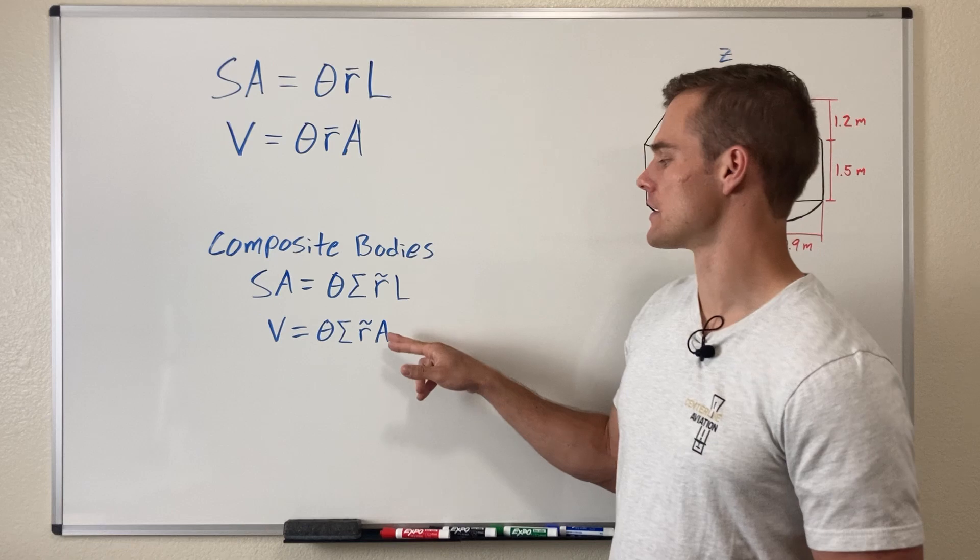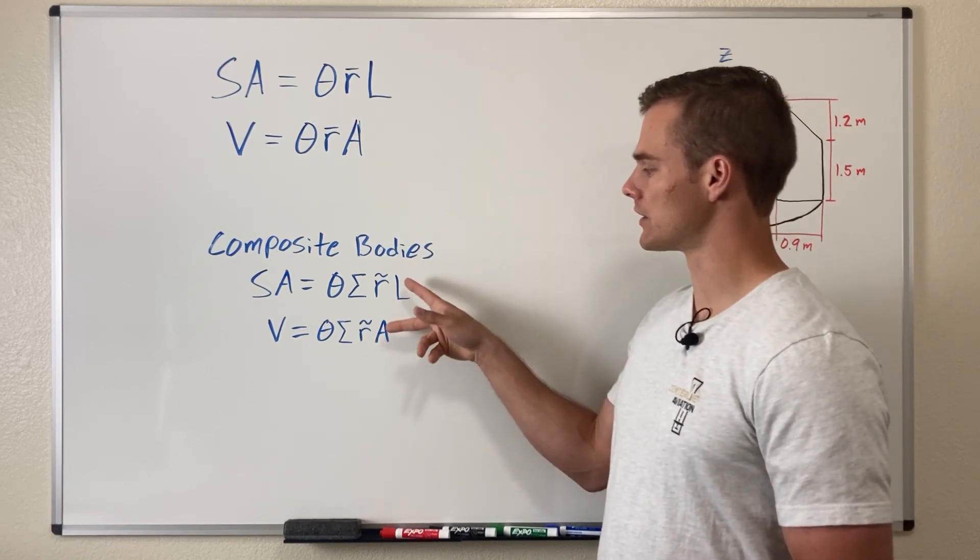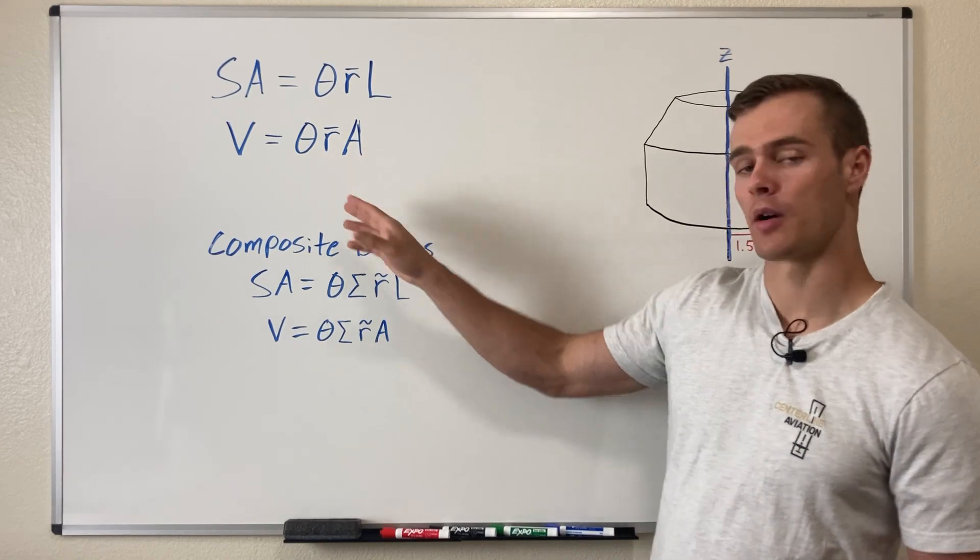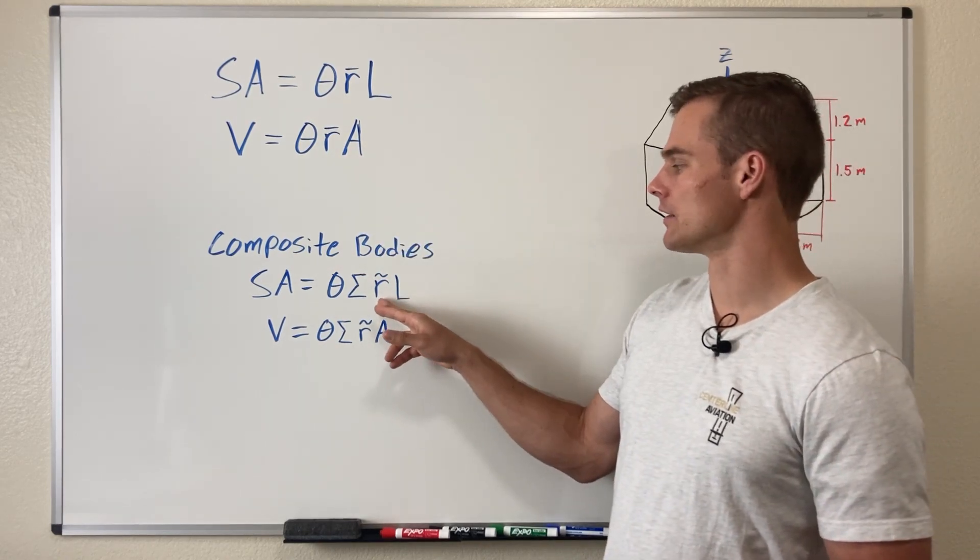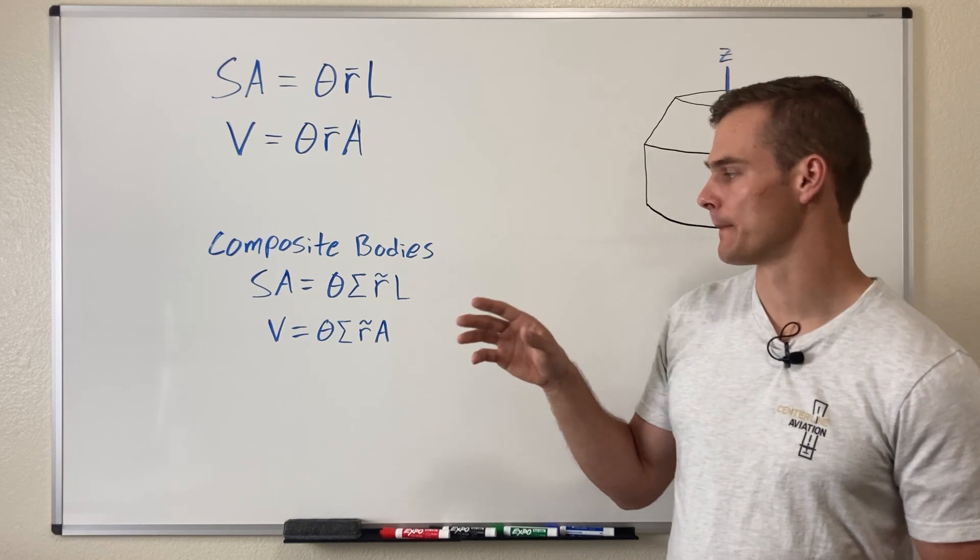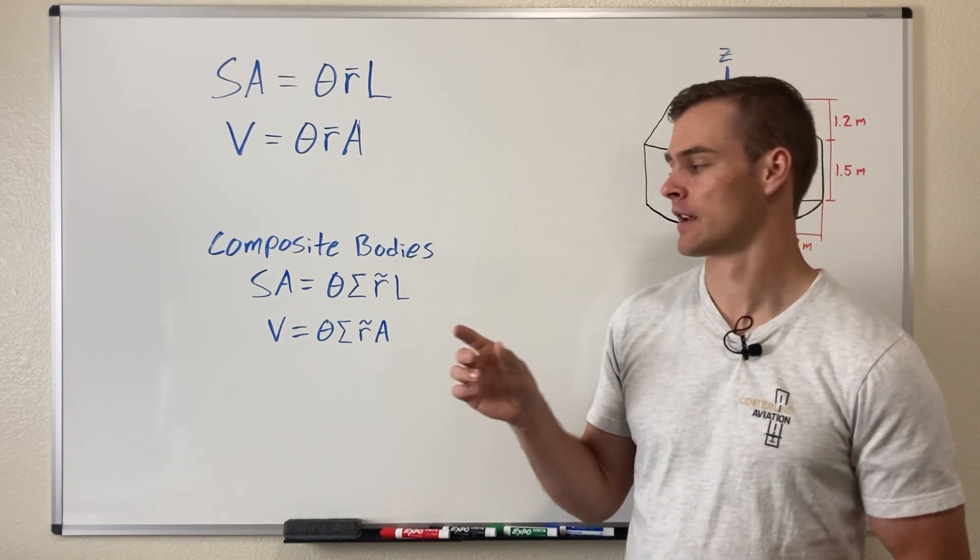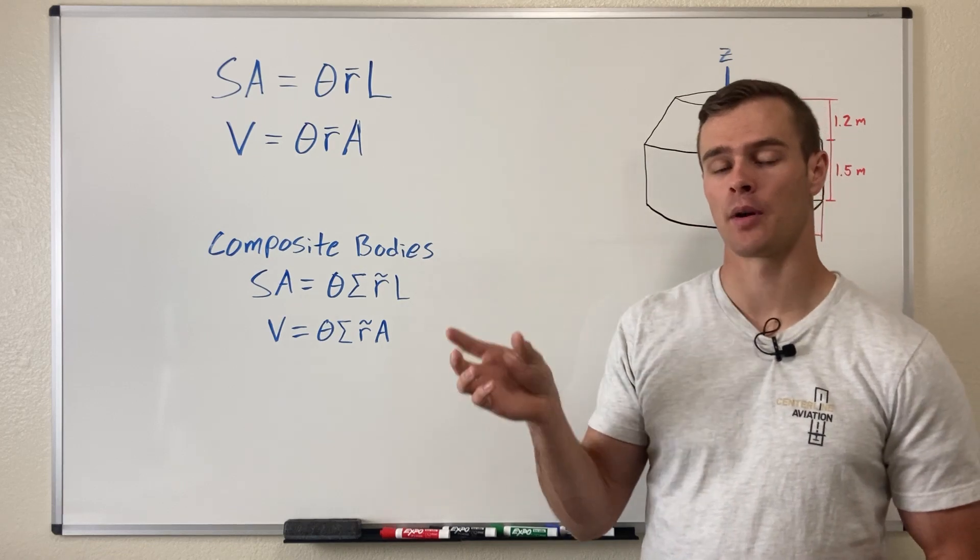L and A are the same as in these equations, and R tilde is almost the same as R bar, but R tilde is the perpendicular distance between the axis of rotation and each component centroid.